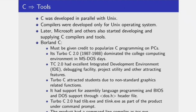We know that C was developed in parallel with Unix. Compilers were developed only for the Unix operating system. After some time, Microsoft and others also started developing and supplying C compilers and tools. So let's look at a few of them.